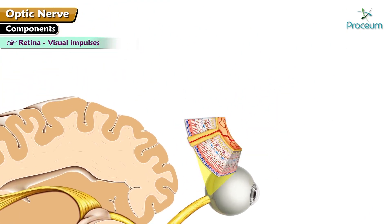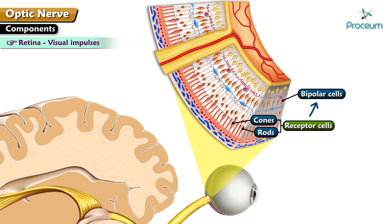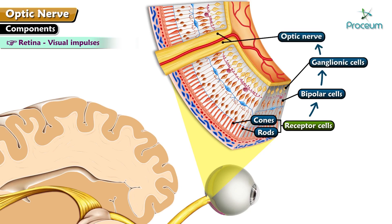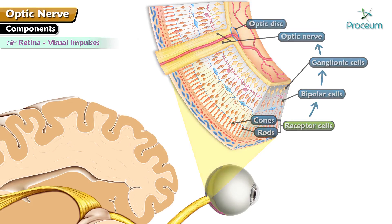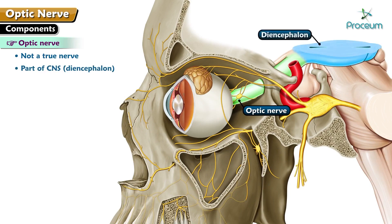The retina receives visual impulses from the receptor cells, which include the rods and cones, and transmits them to bipolar cells and later to ganglionic cells. The axons of the ganglionic cells collectively form the optic nerve, which initiates from the optic disc. The optic nerve is not a true nerve and is actually a part of the central nervous system, the diencephalon, which is myelinated by oligodendrocytes.